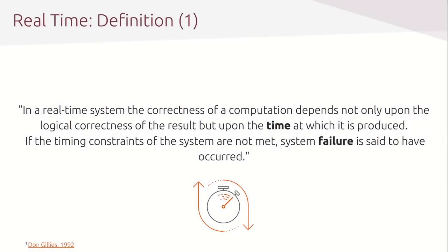Looking at this definition, the main thing I want you to take out of it is the reference to the timing constraint. A real-time system is a time-bound system which has a well-defined, fixed time constraint. If the real-time system is unable to service its real-time tasks within this specified upper boundary of time — if processing is not done within this defined constraint — then the system has failed. So we have two key aspects: a time-bound, well-defined, fixed time constraint, and performing the real-time tasks within those constraints.